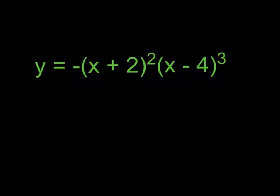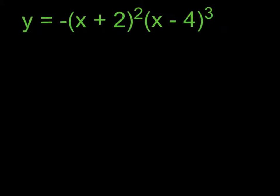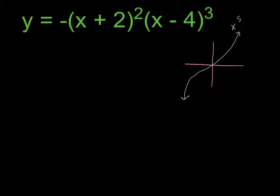Here we see a slightly more complicated polynomial. Let's first try to ascertain the shape. If we factor this out, we can see we'd end up with a 5th-degree polynomial. But we want to notice that we're not going to get simply x to the 5th power — we're actually going to get x to the 5th power times a negative, so we'll end up with negative x to the 5th power.